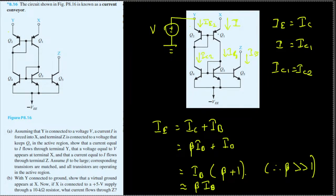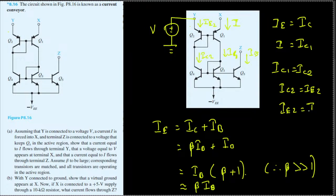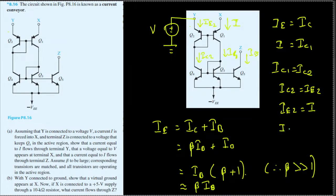Since the base current is almost zero, ic2 = ie2. By the chain of equalities — ic1 = ic2 and ic2 = ie2 and ic1 = i — we get ie2 = i. Similarly, Q3 and Q5 are matched, so ic1 = ic5, and since ic1 = i, we conclude ic5 = i.